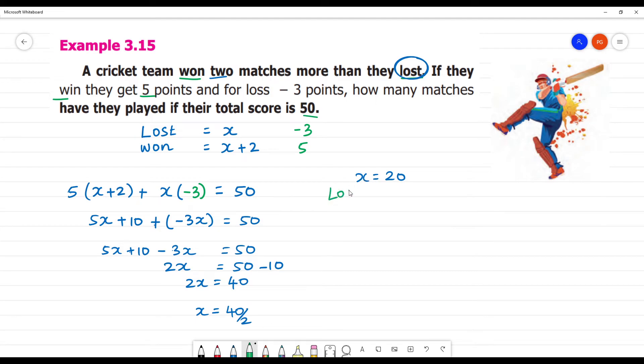x is last match. Last match is 20 match. Win is 20 plus 2, that is equal to 22 matches.